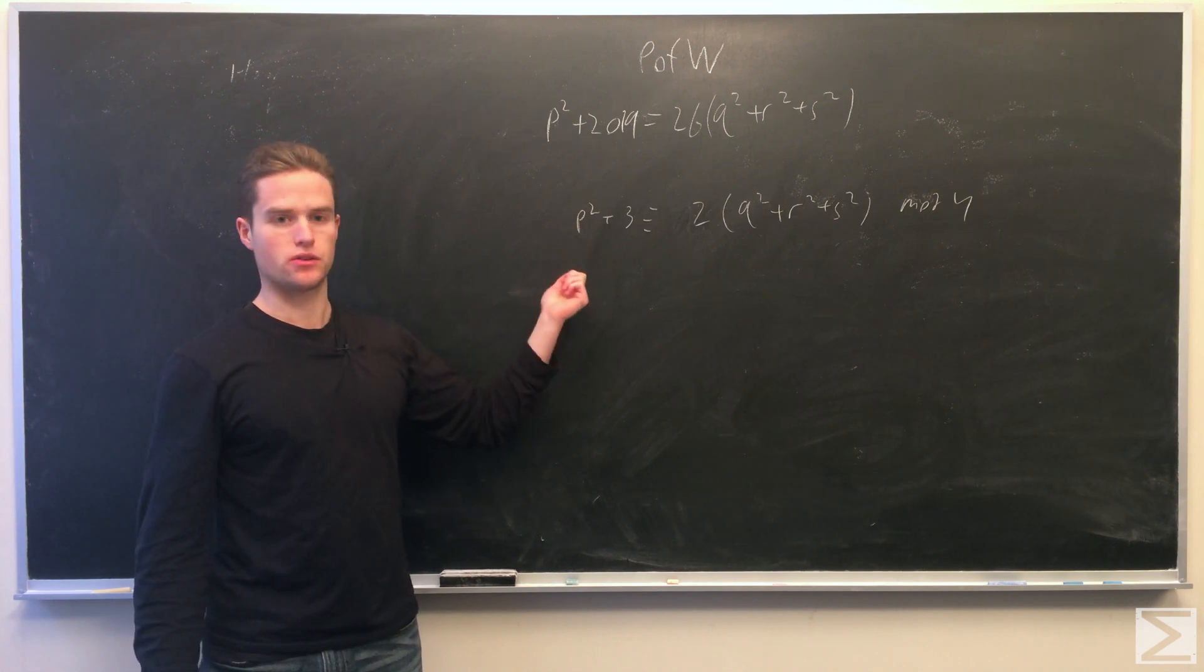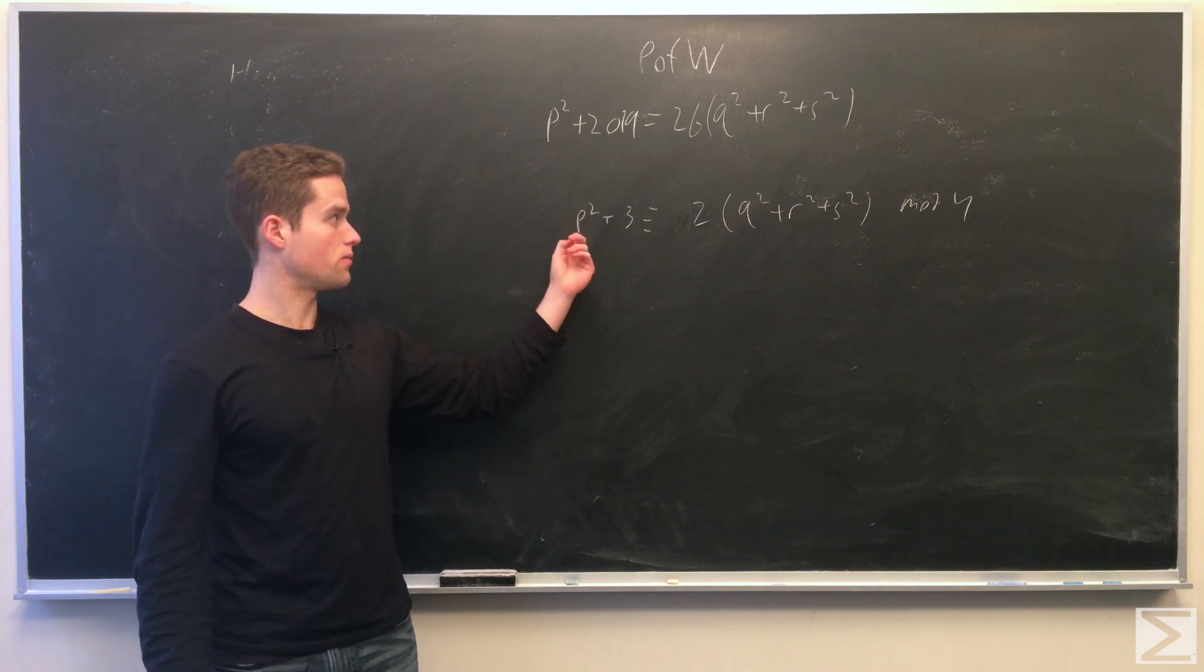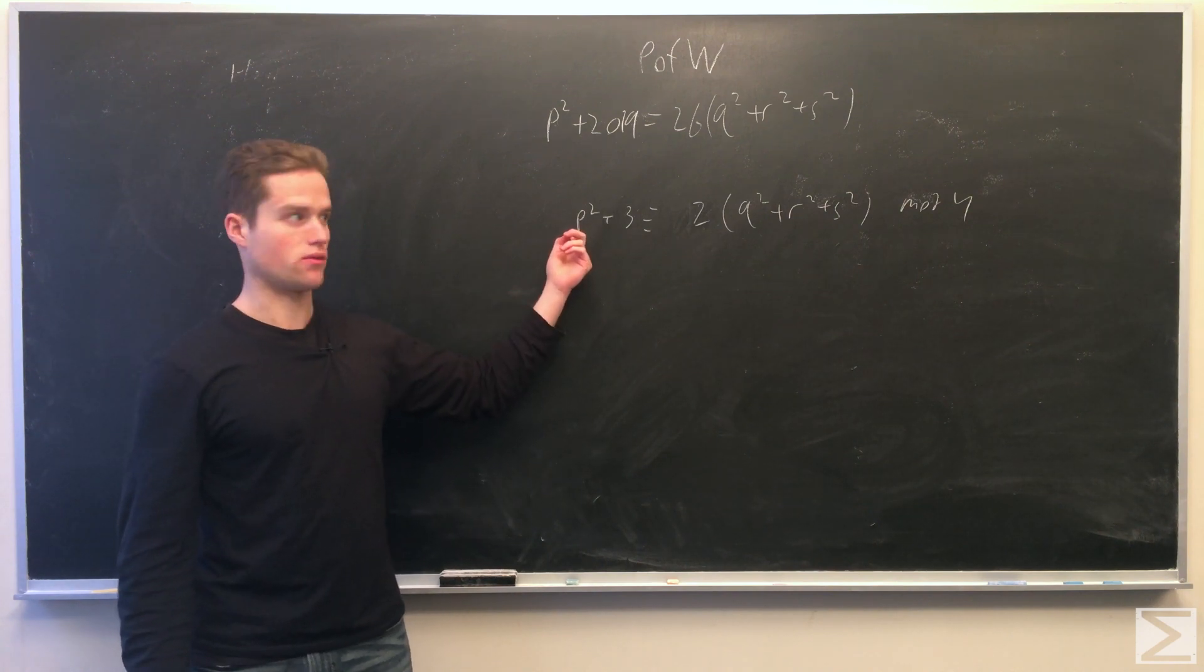If you look modulo four, if you look at the odds 1 and 3, 3 squared is 1, 1 squared is 1. So this has to be congruent to 1 modulo 4.